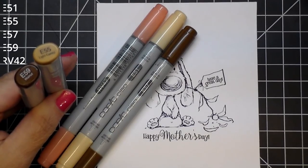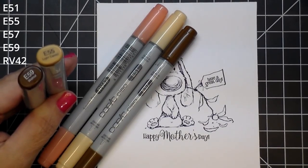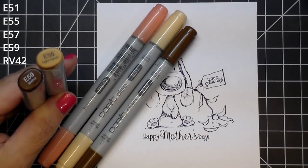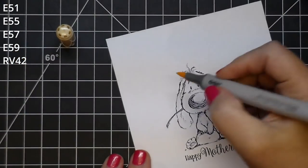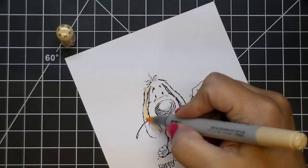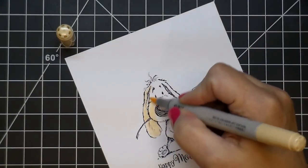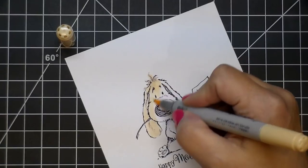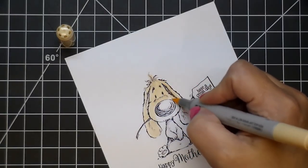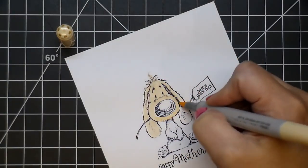I'm using some E colors for the dog itself: E51, E55, E57, E59, and RV42 for the paws and a little bit of the nose. Generally, I start from light to dark and then back out to light.